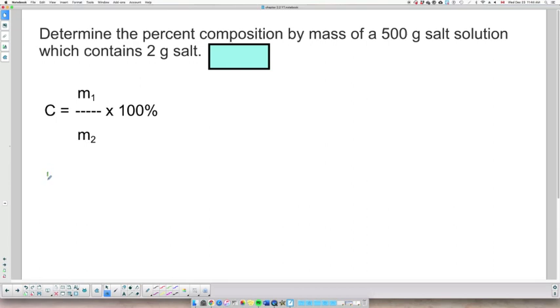So we have a mass of solute, which is mass number one, m₁. It's 2 grams, and we have a mass of solution, m₂, which is 500 grams. We are looking for the concentration expressed as a percentage.